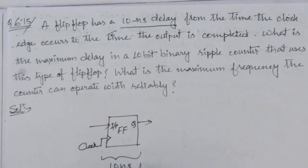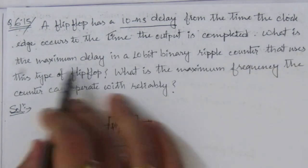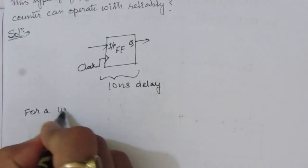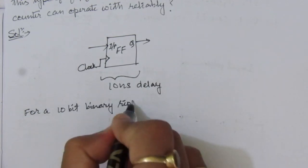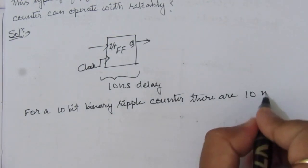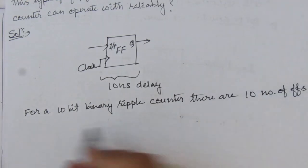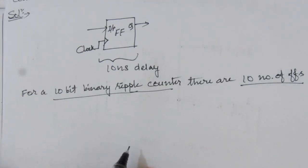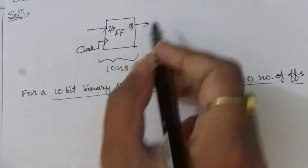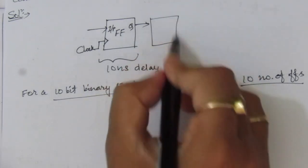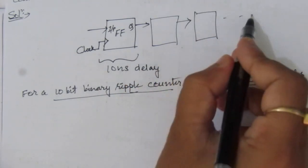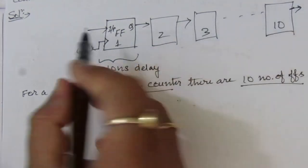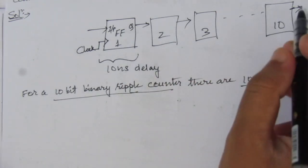We are asked about the maximum delay in a 10-bit binary ripple counter. For a 10-bit binary ripple counter there are 10 flip-flops. If we have 10 consecutive flip-flops, the output of the first is connected to the second stage, and so on up to the 10th flip-flop.